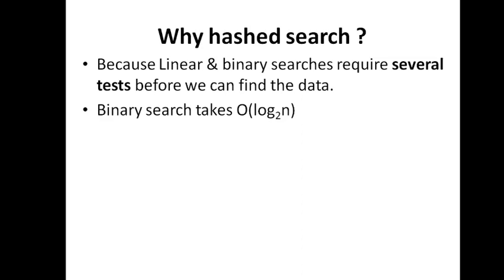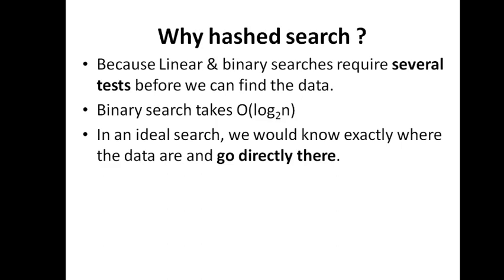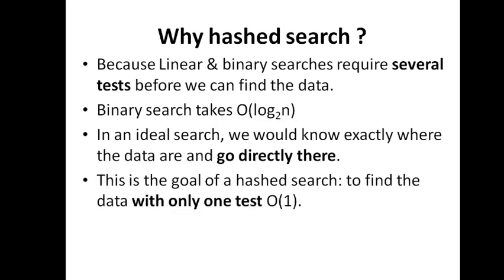In an ideal search, we should not need to compare the element with any elements in the list. We should be able to directly predict the address of the element — without any comparison, we should know exactly where the element is present. This one-to-one mechanism is what is needed to reduce search time, and that is what is achieved by hashed search. Only one test — O(1) — is needed.